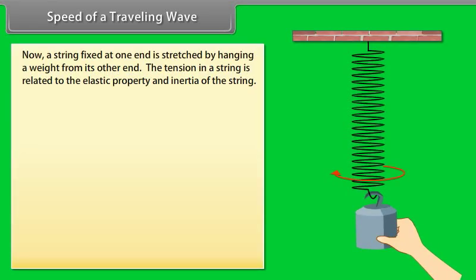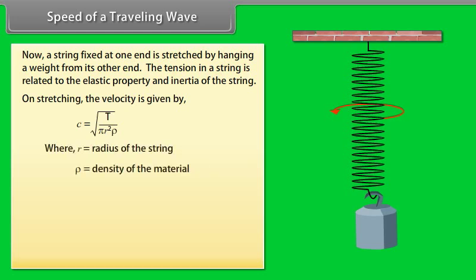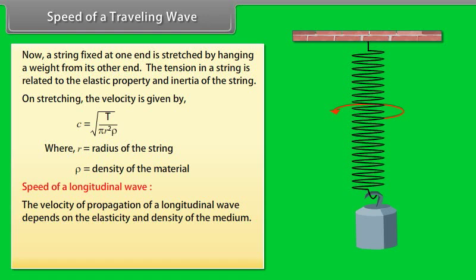When a string is fixed at one end and stretched by hanging a weight from its other end, the tension in the string is related to the elastic property and inertia of the string. On stretching, the velocity is given by c = √(T / πr²ρ), where r is the radius of the string and ρ is the density of the material. Speed of a longitudinal wave: The velocity of propagation of a longitudinal wave depends on the elasticity and density of the medium. Wave velocity = √(elastic modulus / density).